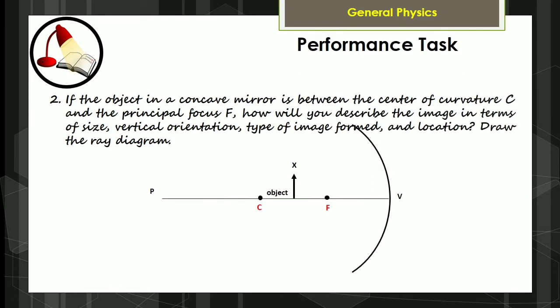For your performance task number two: if the object in a concave mirror is between the center of curvature C and the principal focus F, how will you describe the image in terms of size, vertical orientation, type of image formed, and location? Draw the ray diagram.